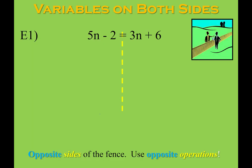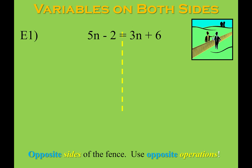The biggest thing to understand is when you look at this problem, I need to get the n's to be together. Right now I have a 5n on the left side and a 3n on the right side. How do I get them to be together? I can't just add them together because they're on opposite sides of the equal sign — that is a common mistake that students make. They're on opposite sides of that equal sign, so in order to get them together, I have to use opposite operations.